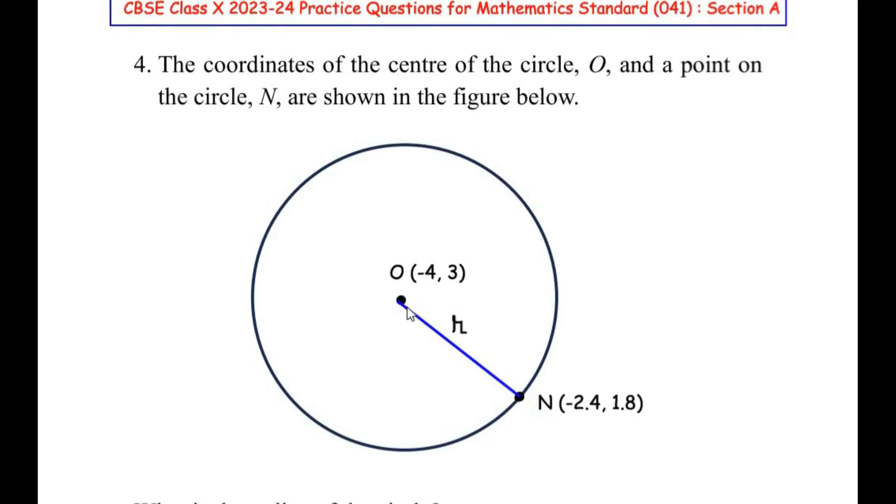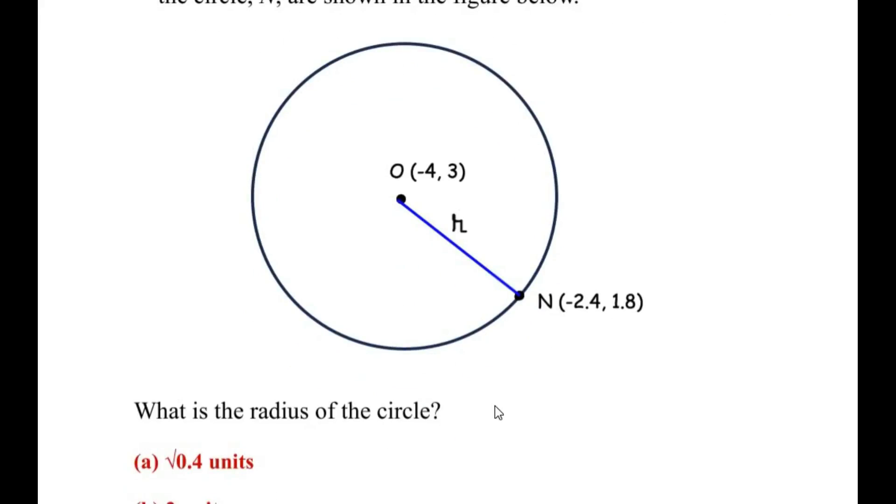The distance between point O and point N. So the distance formula is given by: d equals square root of (x₁ - x₂)² plus (y₁ - y₂)². This represents your distance formula.